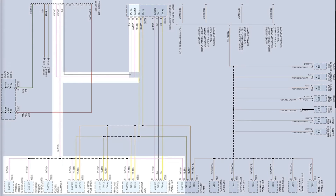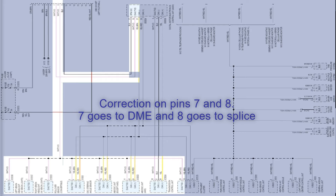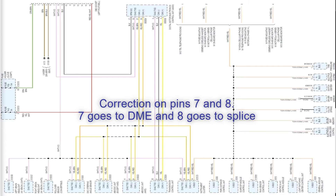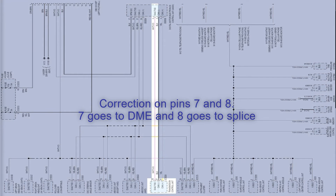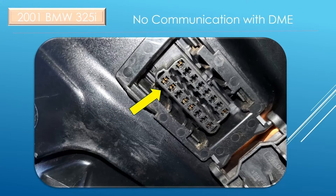Looking at the DLC, there are two communication lines. Pin 7 goes to a splice that then breaks off and goes to many modules. Pin 8 is the same color and goes directly to the DME and only to the DME. There's also another comm line from the DME that goes to the transmission controller, but this is a manual transmission and does not have a trans controller. Since we are having a communication issue only with the DME and there is a separate comm line on the DLC specifically for the DME, I need to make sure the pins are okay at the DLC so that our scanner can get a good connection.